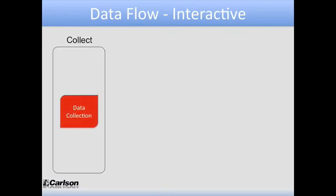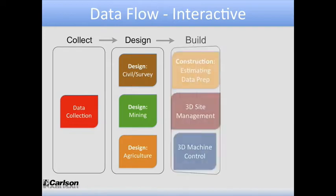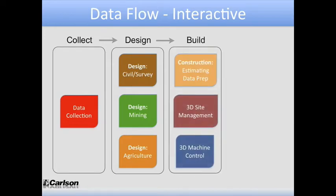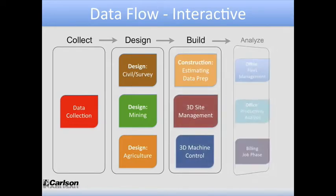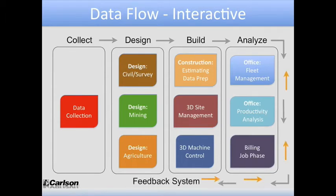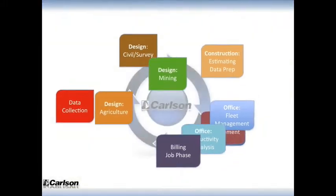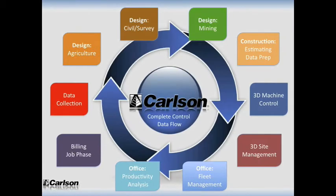Carlson has products in each space along the concept-to-completion journey. Generally, we're talking about data collection, the design phase, building those designs, and then tracking productivity — being able to make changes and place them back into the system so that change orders are implemented easily. Let's look at the Carlson product line as they sit around this wheel of data in the different categories.